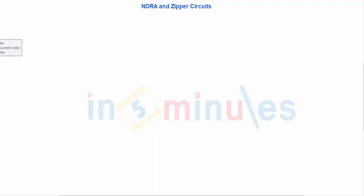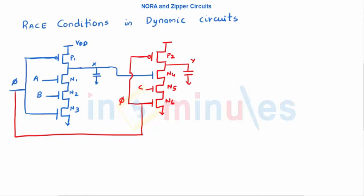Welcome to 'In 5 Minutes.' The agenda of this clip is to understand NORA and Zipper circuits. NORA circuits stand for 'No Race' — N-O-R-A. We'll understand why the name is given as NORA. First, let's understand the drawbacks faced in dynamic circuits. We already saw that monotonicity is one major drawback; in this clip we'll see another drawback — the race condition — and to avoid this race condition we use NORA, so it's called 'No Race.'